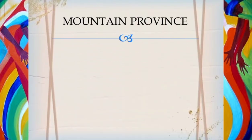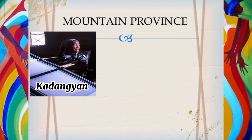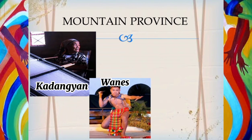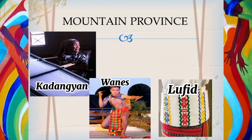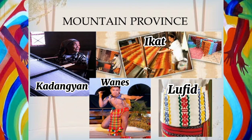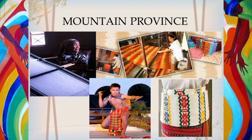In the Mountain Province, the Kadanyan is a burial cloth woven by female elders. The Wanes is the men's traditional attire. The Loofed is the women's short and narrow wrap-around skirt. Ika is the process of tying the threads to prepare the patterns before they are woven into textile.